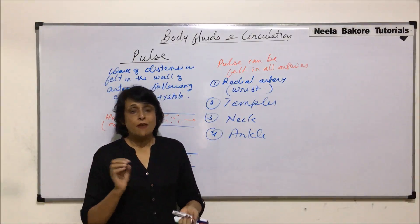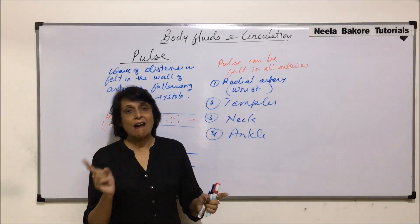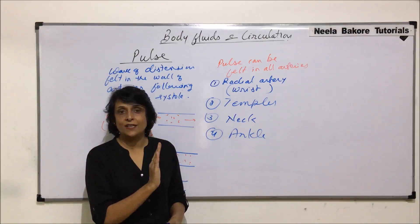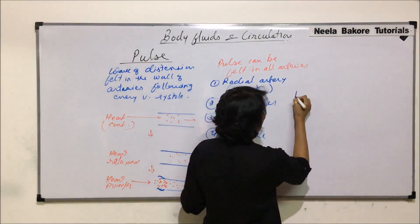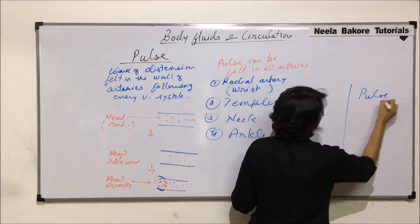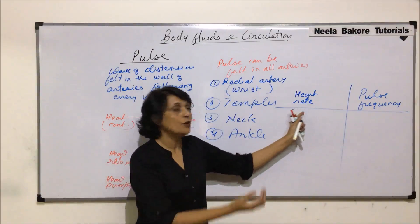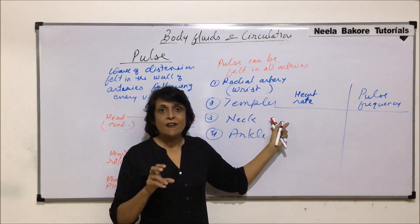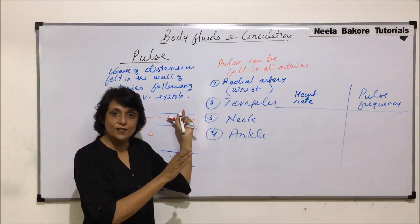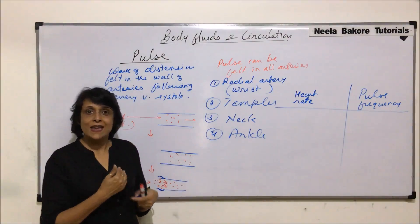Whenever we try to feel our pulse, we are actually counting our heartbeat. So how are pulse and heartbeat related? As explained, every time the ventricle contracts, the pulse is generated. Heart contracts, pulse is felt. Heart contracts, pulse is felt. So every time a pulse is felt, that means the heart has contracted, and we can calculate the heartbeat that way.